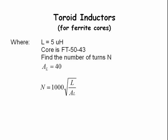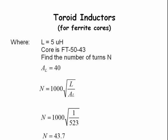Therefore, the number of turns N equals 1,000 times the square root of 5 divided by 523, which gives the number of turns as 43.7.